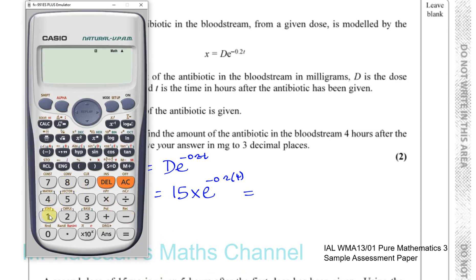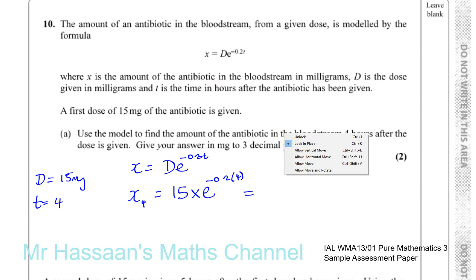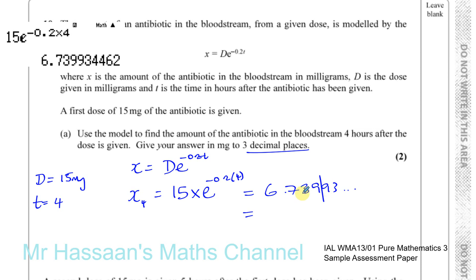So you've got 15 times E to the power of minus 0.2 times 4, which is minus 0.8, and that will give us the answer 6.7399 continuing. We want it to three decimal places, so that's 6.740 milligrams. So there's the answer for part A.